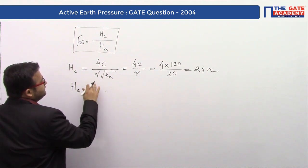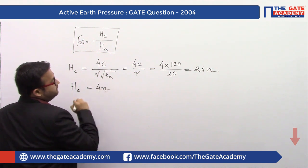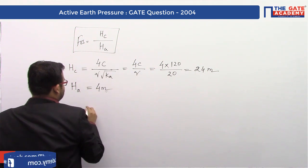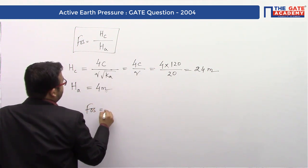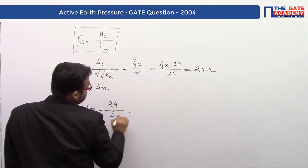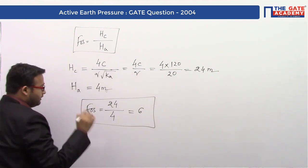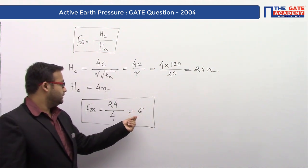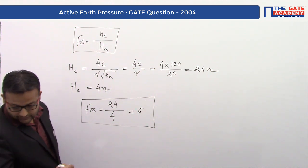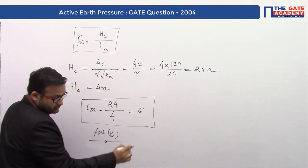From the figure, the actual height of the cut is 4 meters. Putting these two values into the formula: factor of safety equals critical height divided by actual height, which is 24 divided by 4, giving a factor of safety equal to 6. So the answer to this problem is option B. This was a GATE 2004 problem. Thank you.